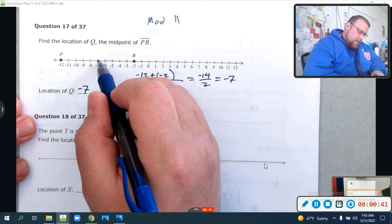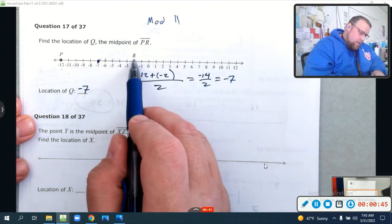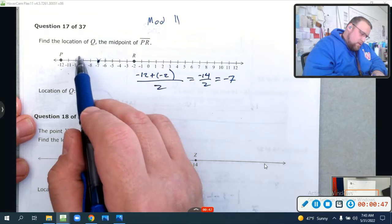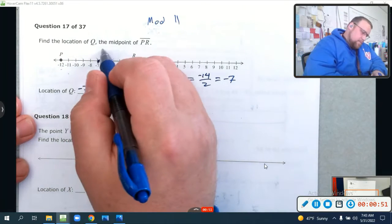And we can test it. It's negative 7. 1, 2, 3, 4, 5. 1, 2, 3, 4, 5. See how that works? It's 5 from each point. So this is the point Q.